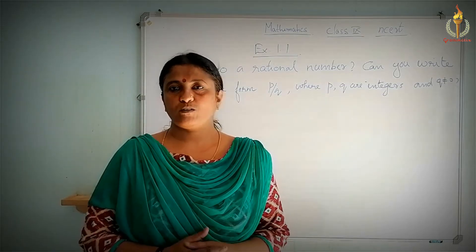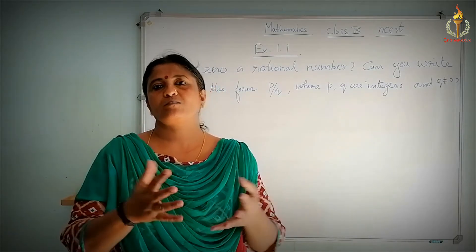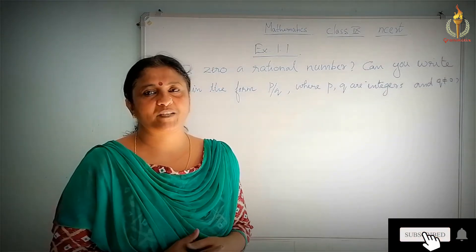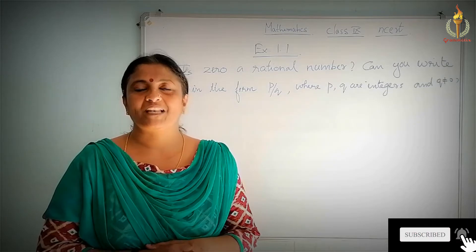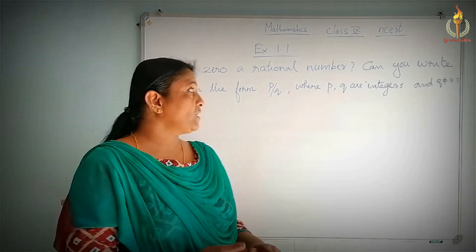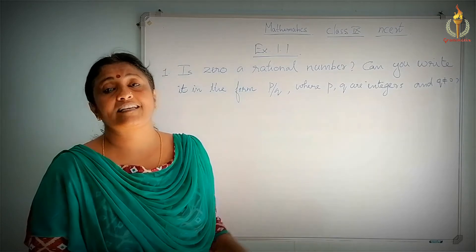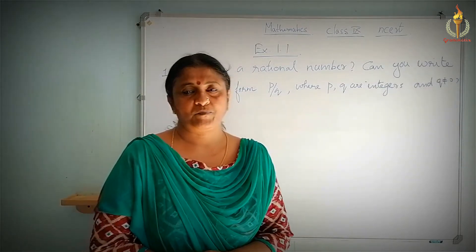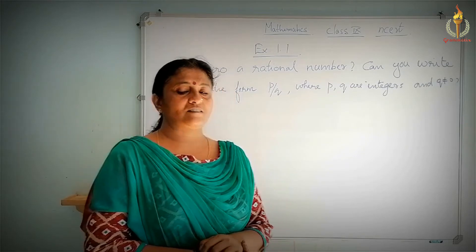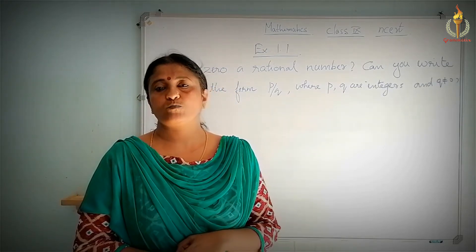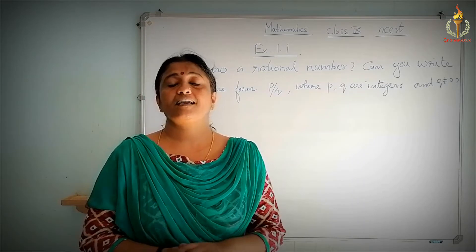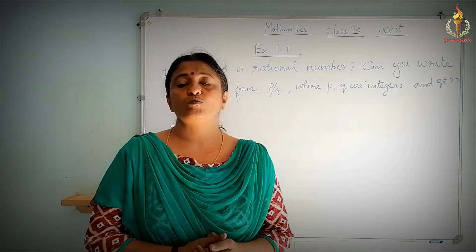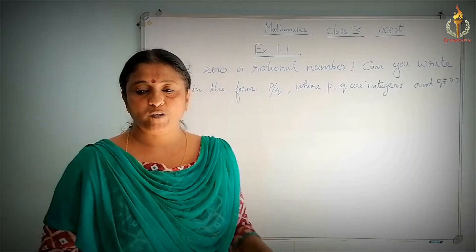Hi guys, welcome to another episode of Grammatics. Those friends who are viewing it for the first time, please do like, share and subscribe my channel and don't forget to hit the bell icon. Moving on to this episode, we are having the exercise of class 9 mathematics NCERT book. So first exercise, the chapter deals with number systems and the first one we studied last class — how to find rational numbers between any two given numbers. So, we will be moving on to the exercise.